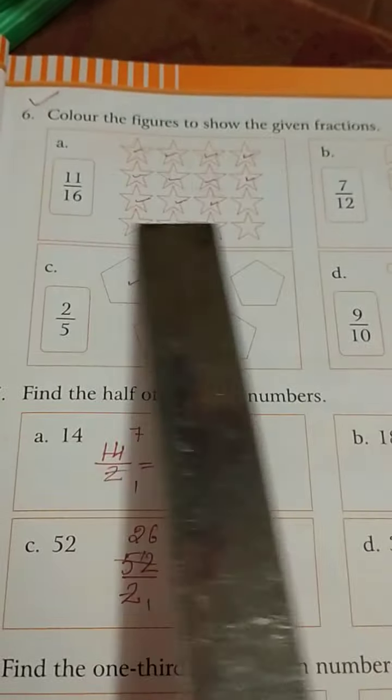Next is 2 by 5, in 2 boxes we will color only and total boxes are 5. Here is 9 by 10 means in 9 places we will color, we will fill colors.